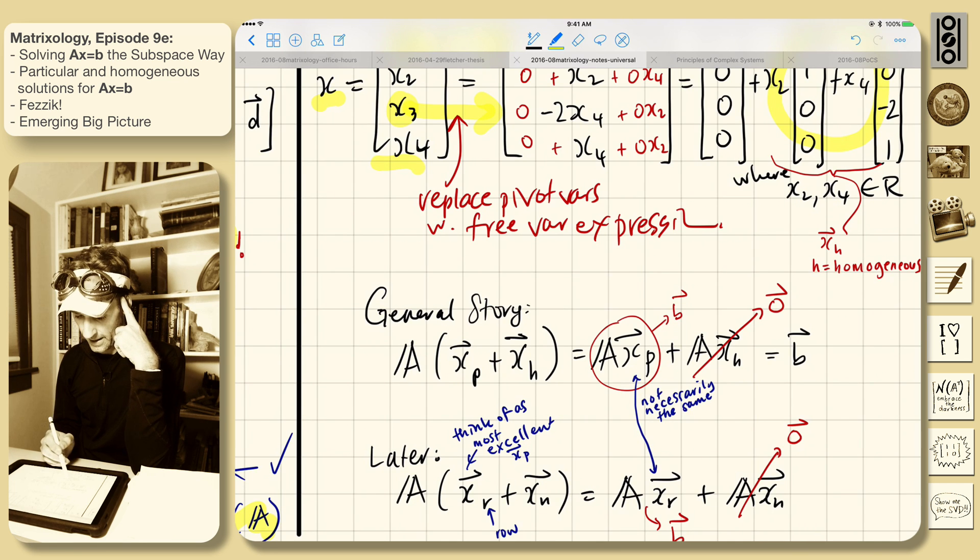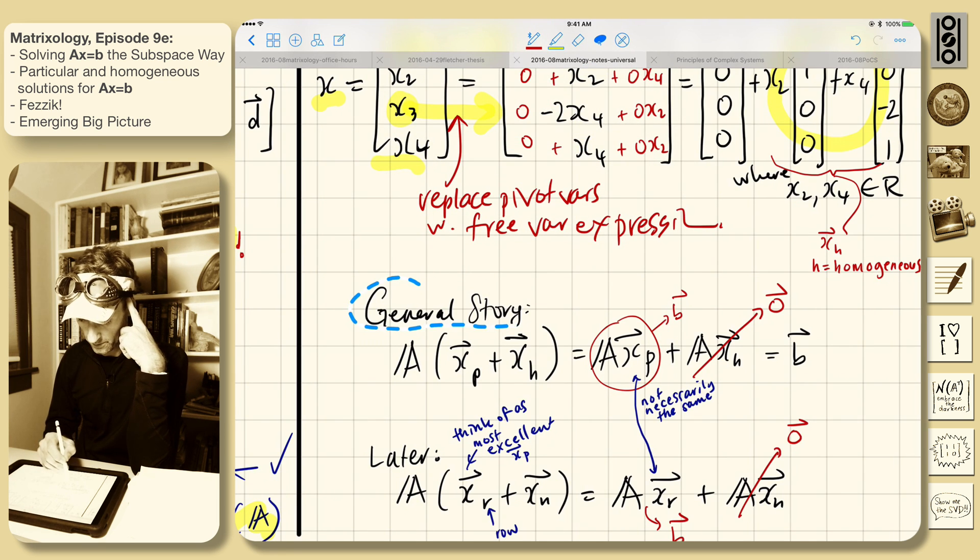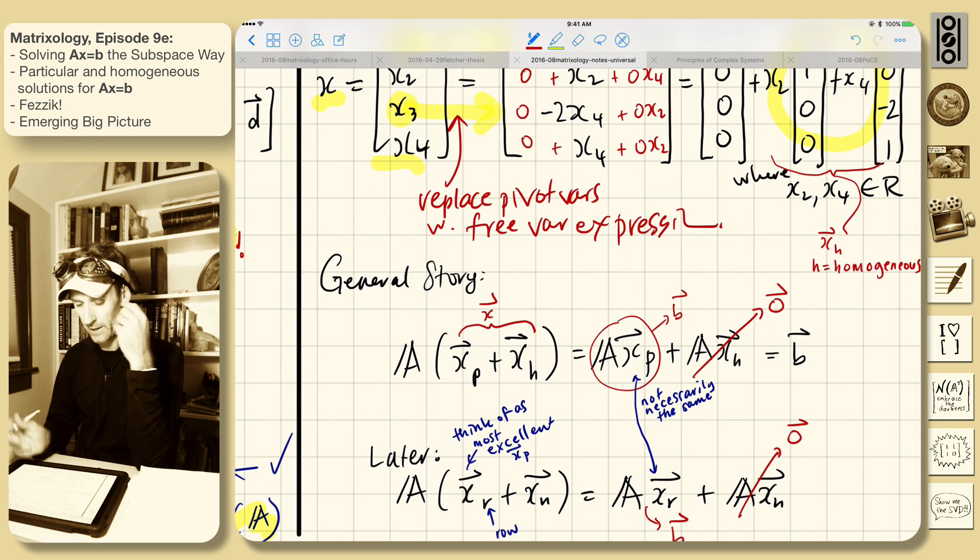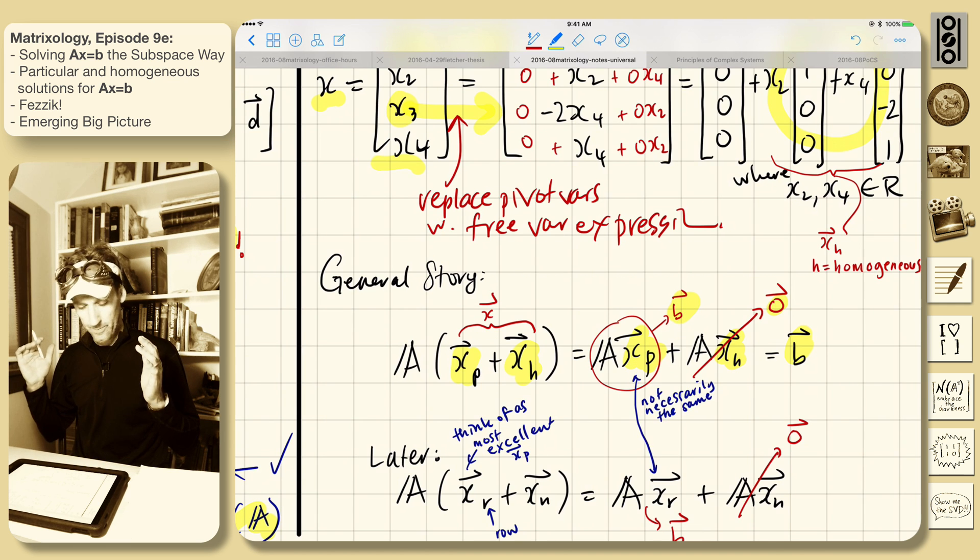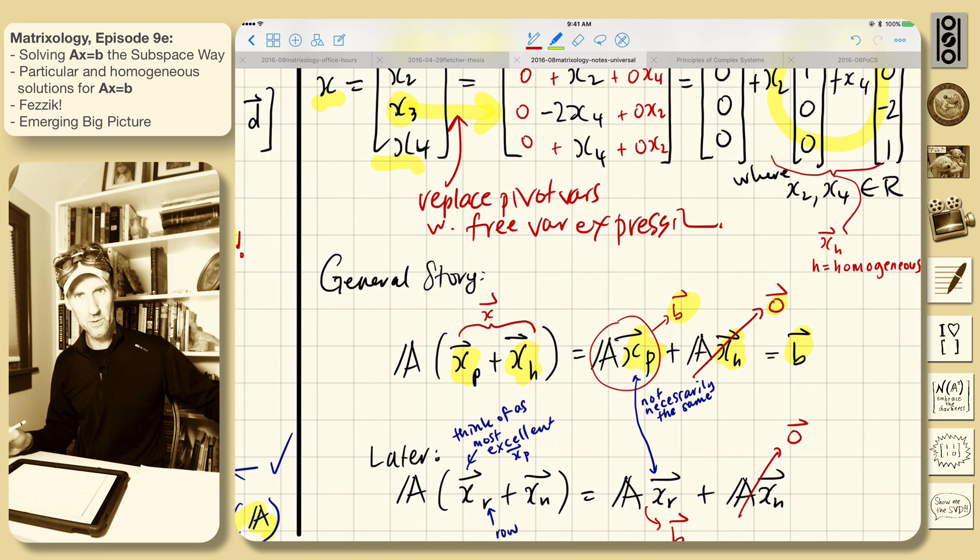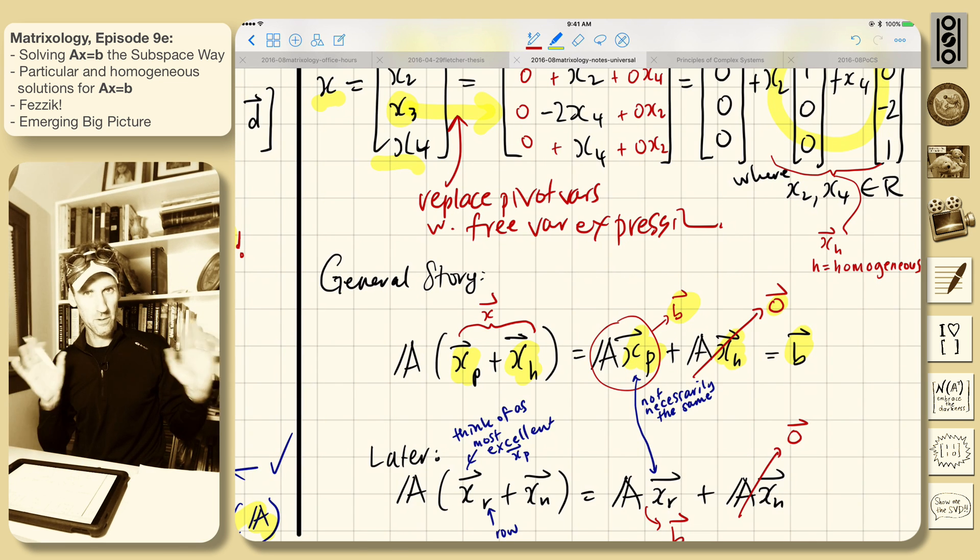The general story is this: A times - this is x, this is our general solution here. This is x. x can be broken into two pieces: x particular, and A times x particular is the piece that equals B. A times x homogeneous is always zero. This is something we just have to accommodate right now. We'll see more about as we go along. But if we have a particular solution, we are required really to add all of these extra ones for which A times those equals zero. And this is why we have infinitely many solutions in this case. There is a solution - there is a particular x particular. A times x particular equals B. And then there are all these infinitely many others that we can add.